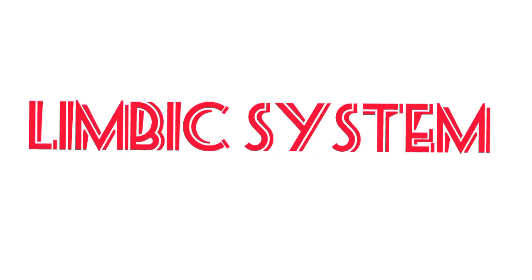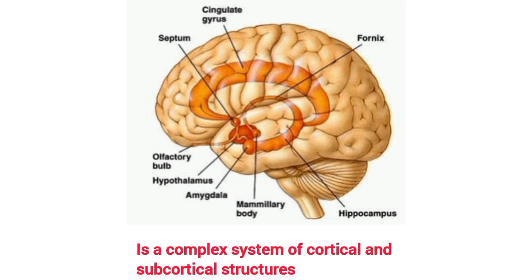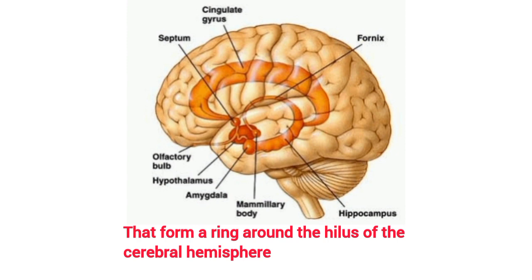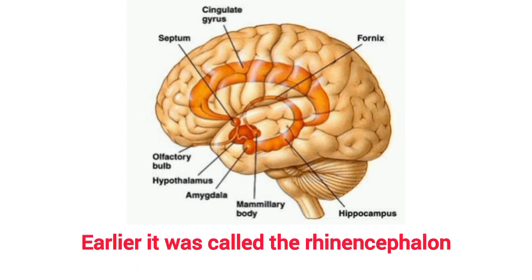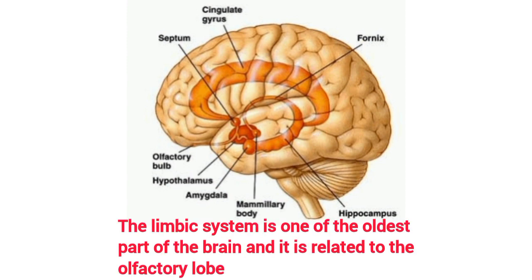The limbic system is a complex system of cortical and subcortical structures that form a ring around the hilum of the cerebral hemisphere. Limbus means ring. It is also known as the limbic lobe. Earlier it was actually called the rhinencephalon. In terms of evolutionary development, the limbic system is one of the oldest parts of the brain and is related to the olfactory lobe.